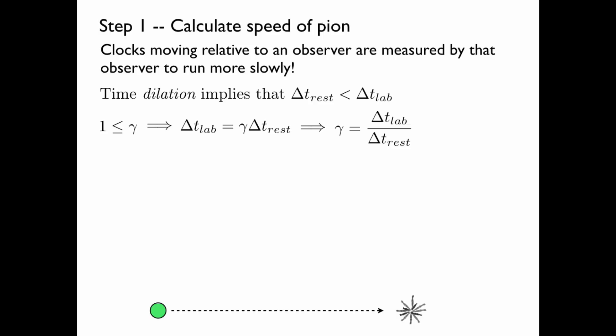In other words, gamma is equal to delta T lab over delta T rest, which is 48 over 26, but we're not going to plug that in yet. We're just going to use the definition of gamma, which is 1 over the square root of 1 minus v squared over c squared, and use this to solve for v.